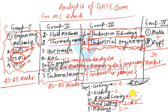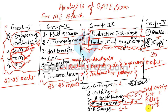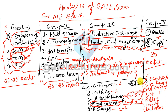In Metal Forming, the topics covered are: cold working, hot working, rolling, forging, extrusion, wire drawing, and sheet metal operations. Questions are straightforward — directly numerical based on formulas. These are the two biggest topics in Production Engineering.